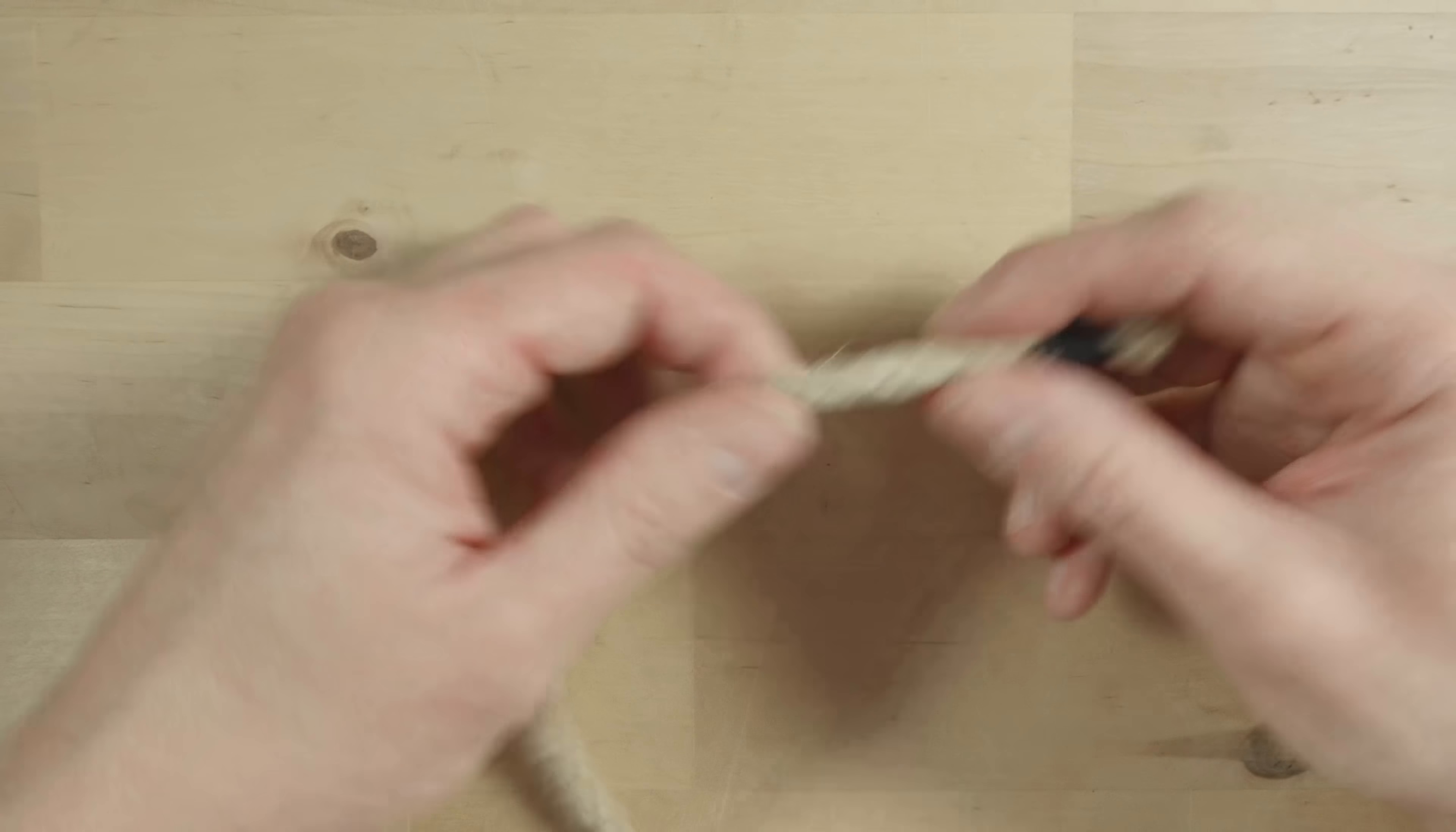Then, using your working end, pass through the bight top down. Like this. Then simply do a series of wrapping turns, wrapping around your bight.